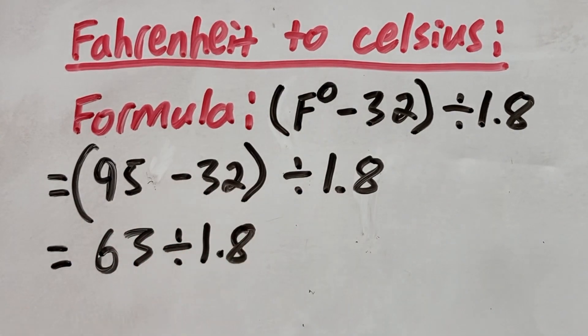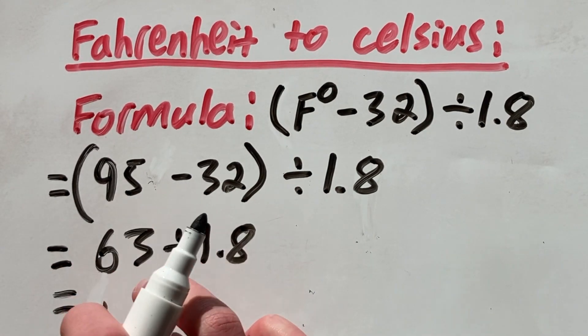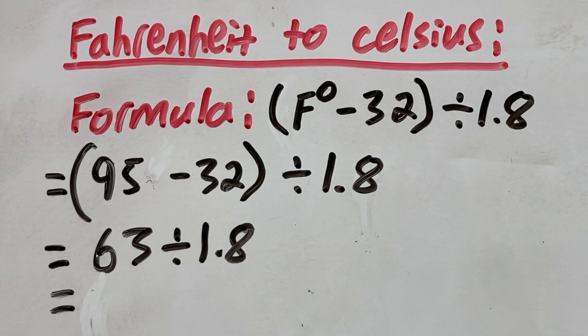And if we keep working down, 95 minus 32 is 63. So now we have 63 divided by 1.8.